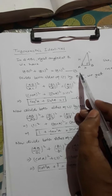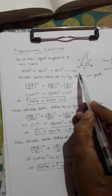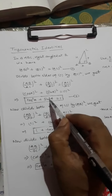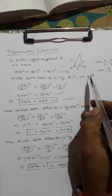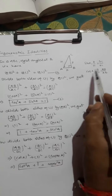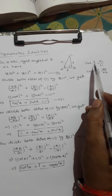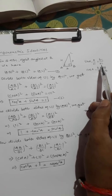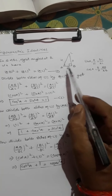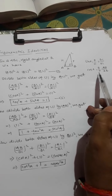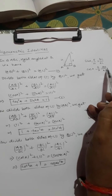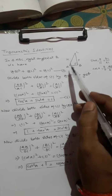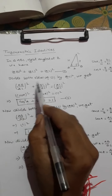Now we are going to derive sin²a + cos²a = 1. For this triangle, sin A = perpendicular upon hypotenuse = BC upon AC, and cos A = base upon hypotenuse = AB upon AC. So we will divide both sides of equation one by AC².